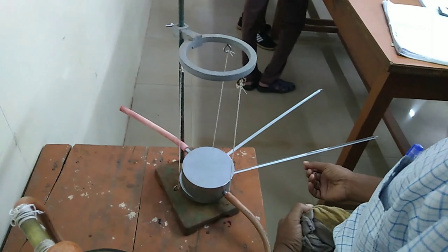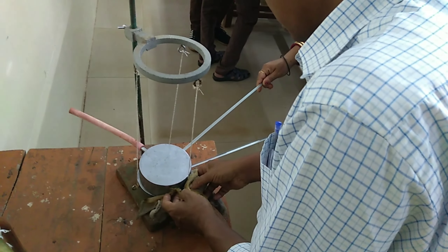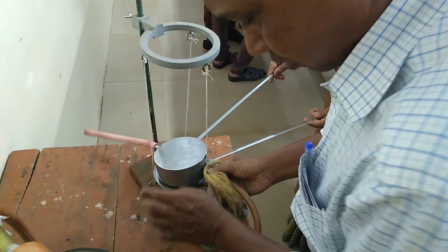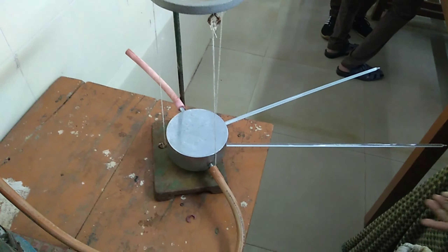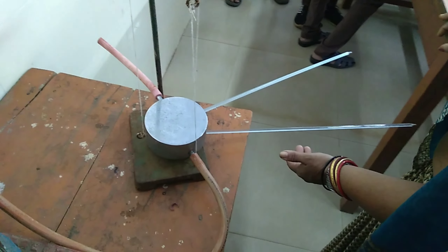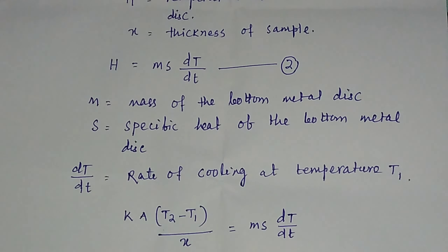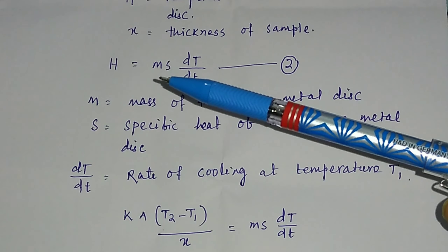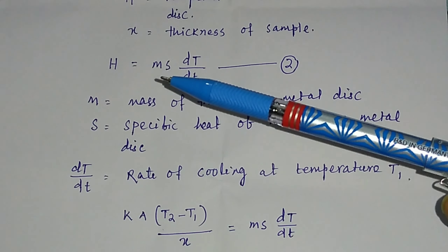After finding the amount of heat flow due to conduction, you take out the specimen. Now with the two disks only, you need to find out the amount of heat radiating from the bottom metal disk — that is, the amount of heat due to radiation.